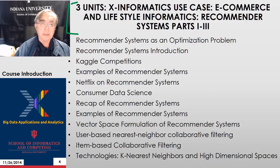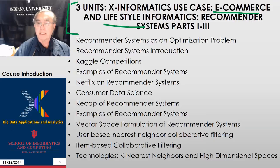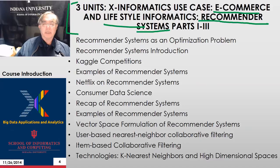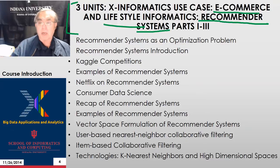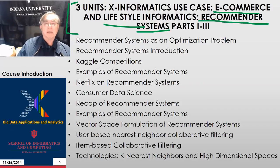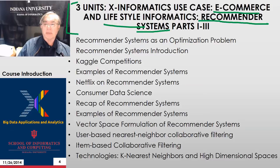The next units are a section on e-commerce, which I sometimes call lifestyle informatics. It has three units and discusses in great detail recommender systems, which are key technology. When you're watching Netflix, it can give recommendations for what you want to look at, or when you're buying things online, it can recommend what you might want — which it does by very clever techniques that relate you to other people and see what other people did.